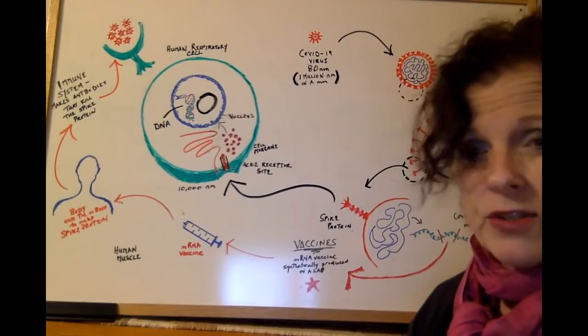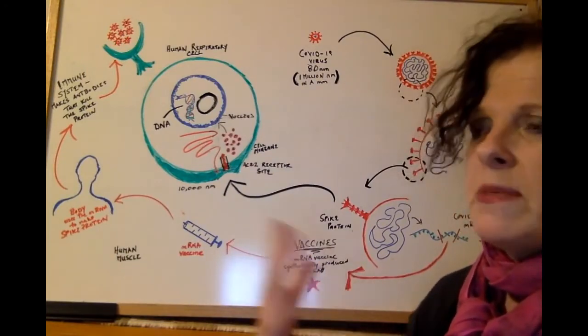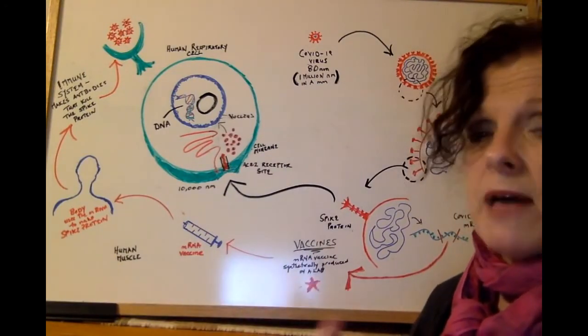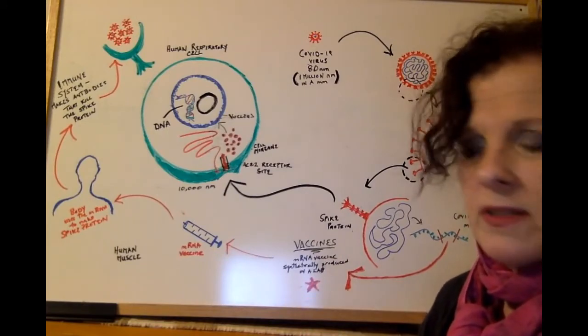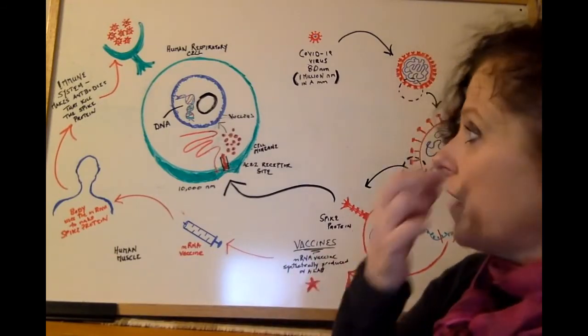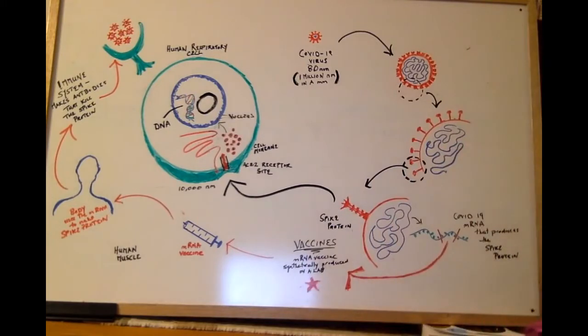Or in the case of the Pfizer vaccine, it's 95% effective, which means that 95% of people will mount a big enough immune response to kill the COVID virus. So here's how that works.